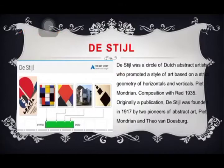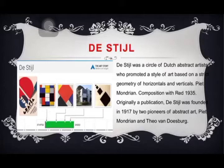De Stijl was a circle of Dutch abstracts who promoted the style of art based on a strict geometry of horizontal and vertical. This style was founded in 1917 by the two pioneers of abstract art, Piet Mondrian and Theo van Doesburg.